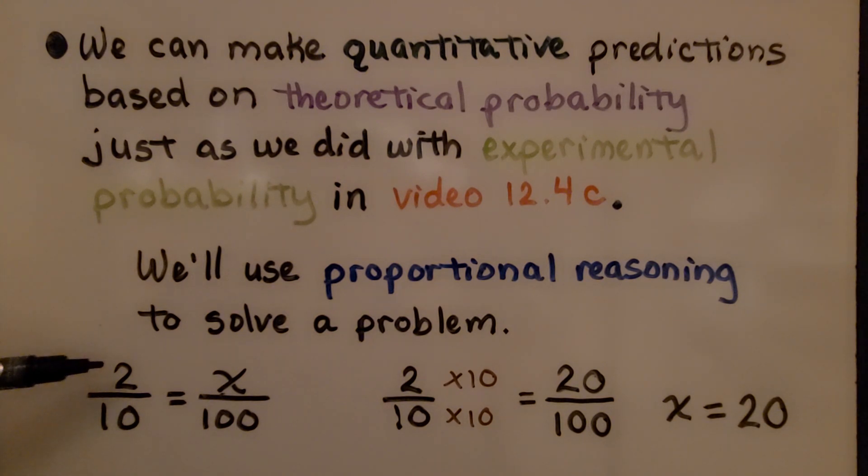If our proportion is 2 tenths out of 100 tries, we use proportional reasoning and think, well, 10 times some number is 100, that would be 10 times 10. We multiply the numerator by the same thing, that would be 20. We know x is equal to 20.